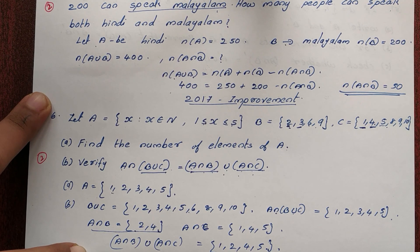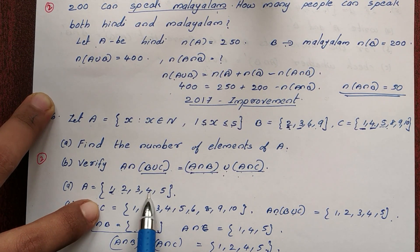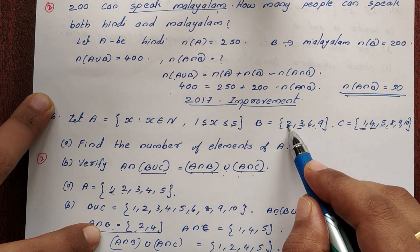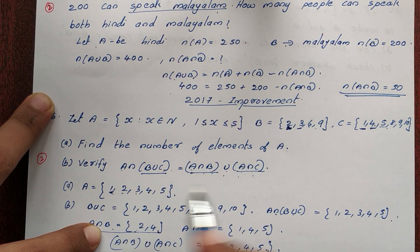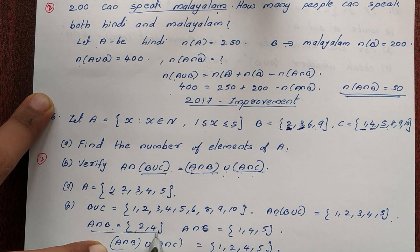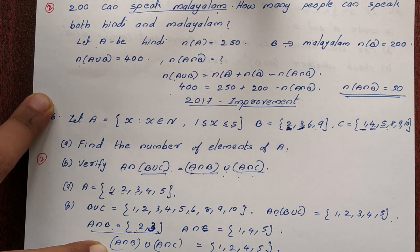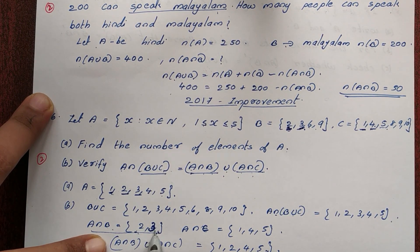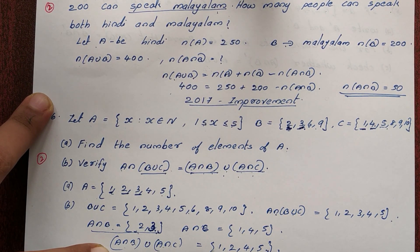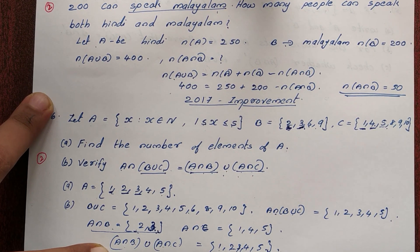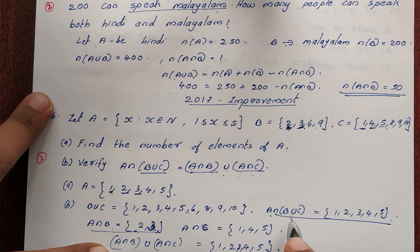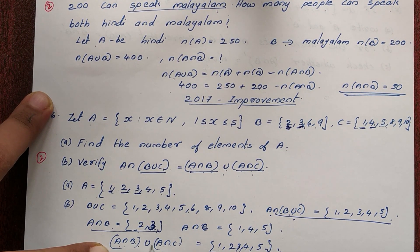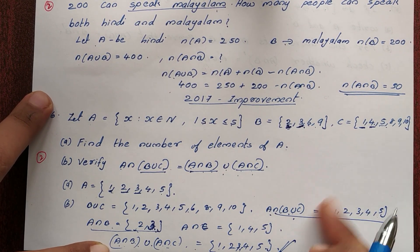A intersection B = {2, 3} and A intersection C = {1, 4, 5}. A intersection B union A intersection C = {1, 2, 3, 4, 5}, which is the same as A intersection (B union C). So A intersection (B union C) = (A intersection B) union (A intersection C) is verified — this is the distributive law.